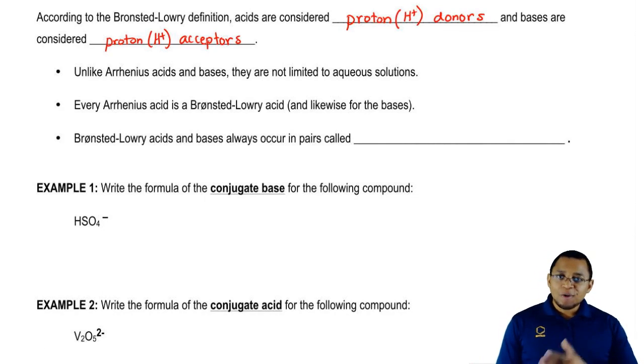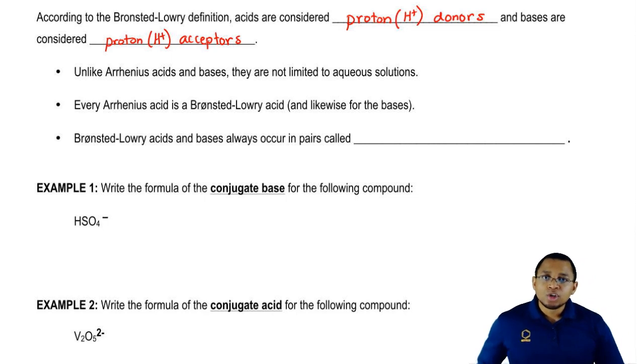We're going to say here Arrhenius acids say they increase H-plus, Bronsted-Lowry says they give H-plus, so both agree. So you can say that Arrhenius acids are Bronsted-Lowry acids.